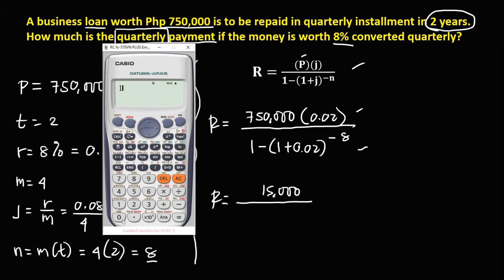So we have 1, then minus, we can combine these two numbers, that's 1.02, then to the power negative 8.